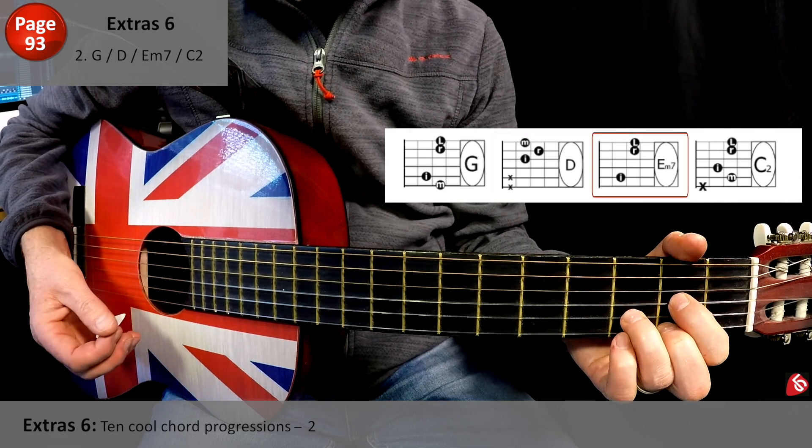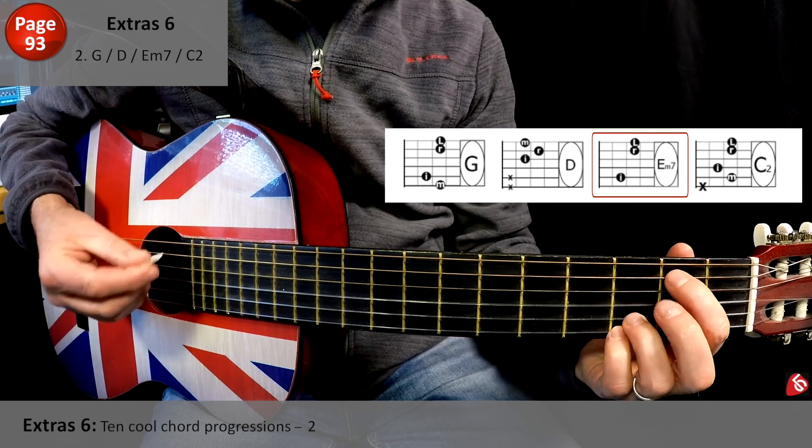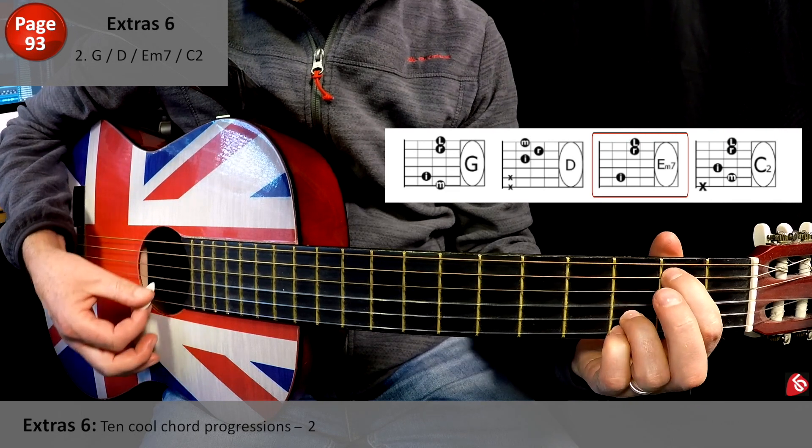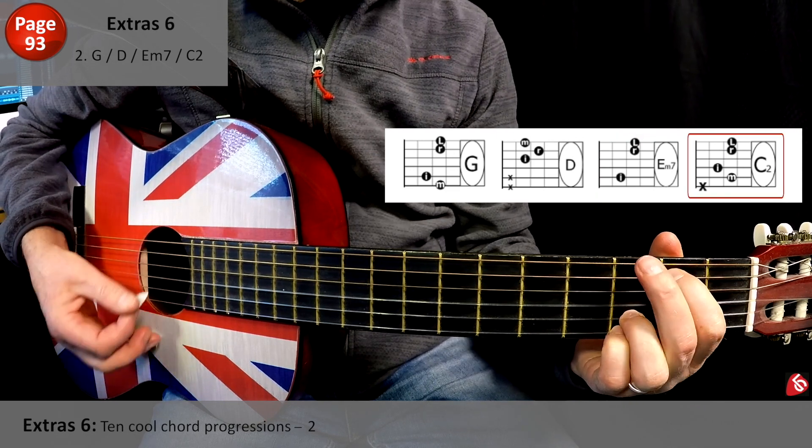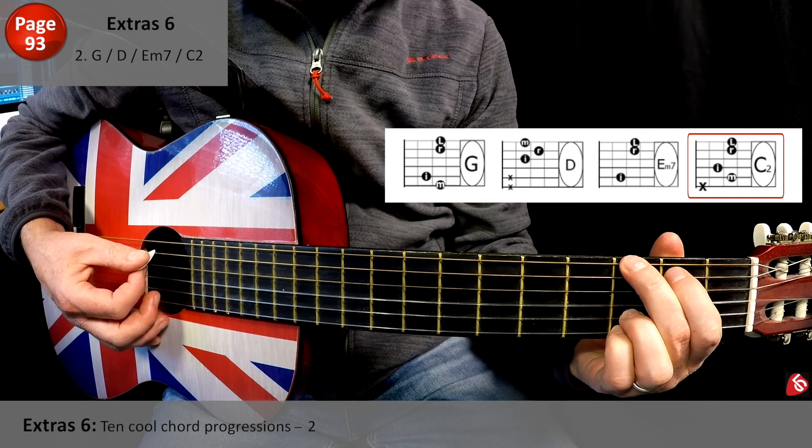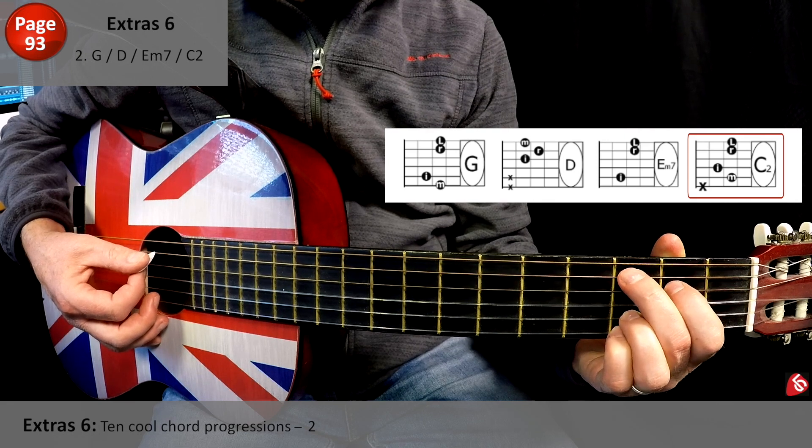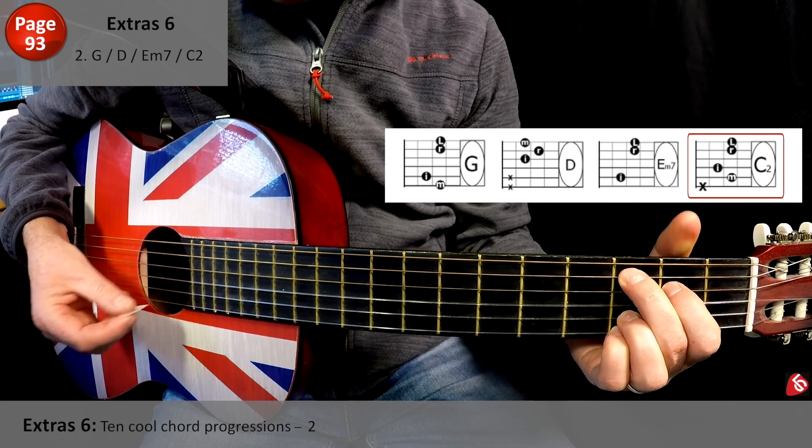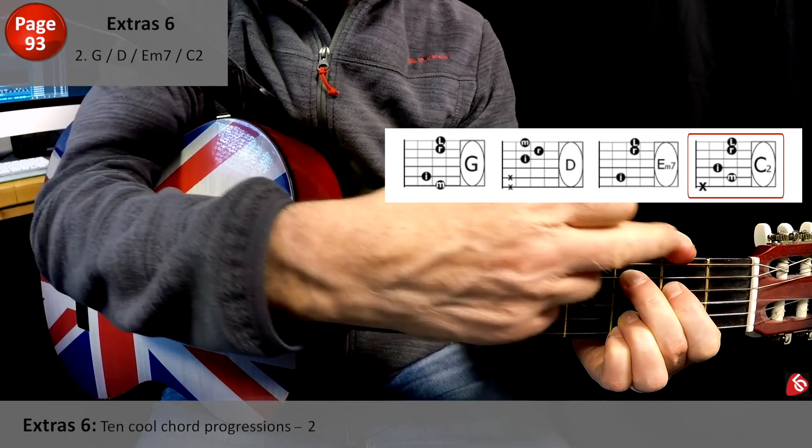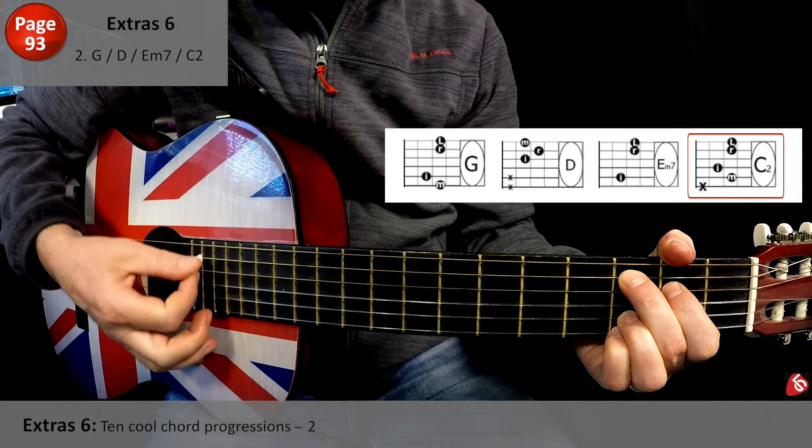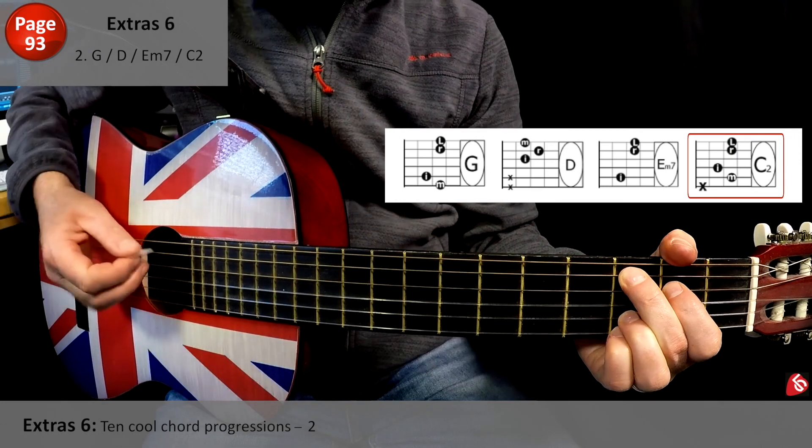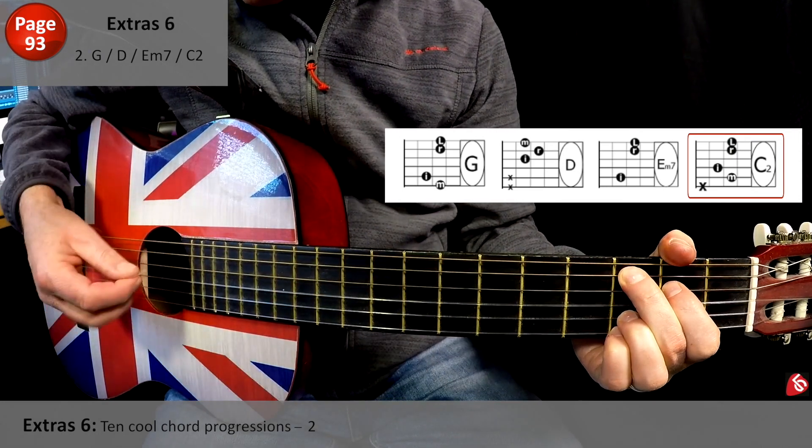E minor 7 - it's basically G without the middle finger. So we're just going to go from the D to the E minor 7. And then C2 is like a mini G. Instead of the middle and the index on the 6th and 5th, we're just going to push down to the 4th and 5th like this. And then you can use your thumb here just to mute that 6th string, or maybe just use the middle finger here just a touch. But we don't really want that 6th string playing.